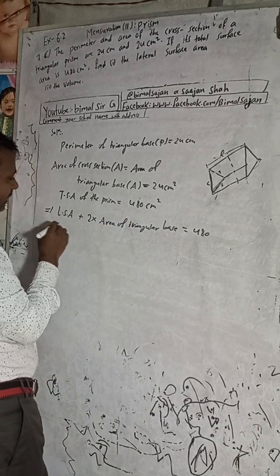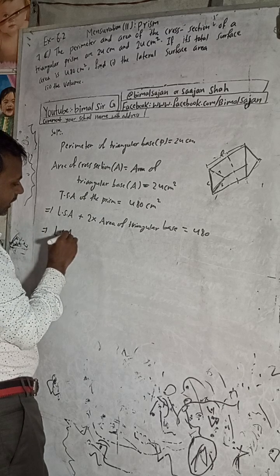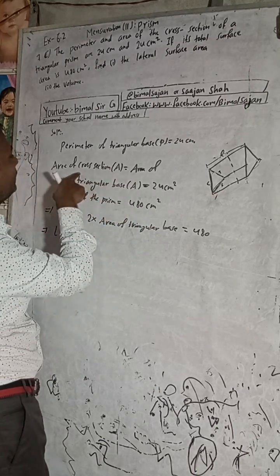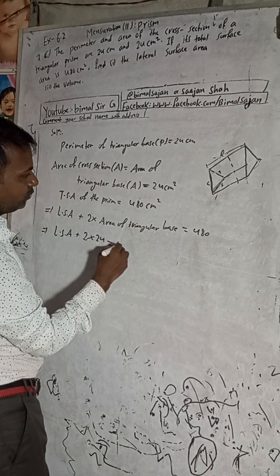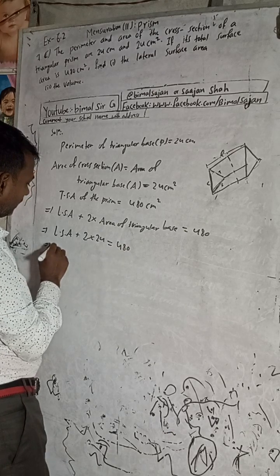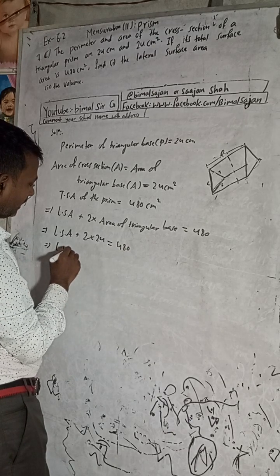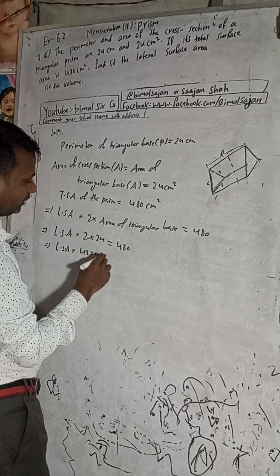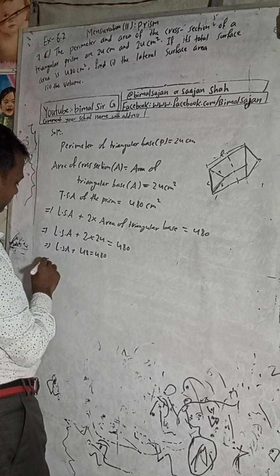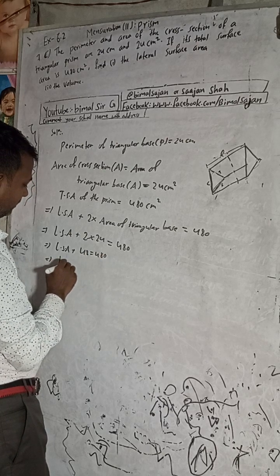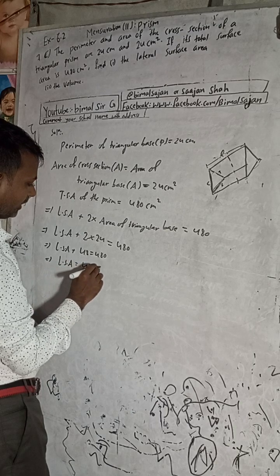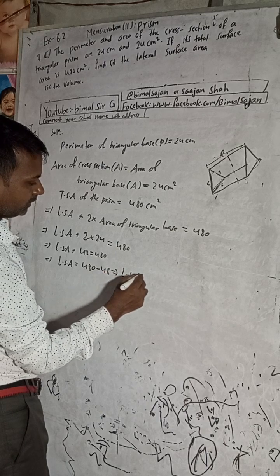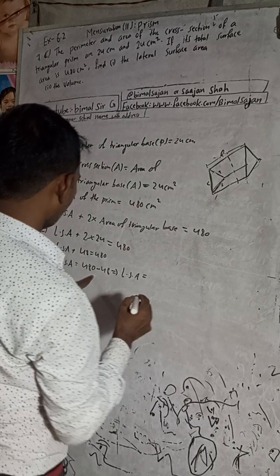So what is the lateral surface area? We have: lateral surface area plus 2 into area of triangular base — which is the same as area of cross-section — equals the total surface area. That means lateral surface area plus 2 into 24 equals 480. So lateral surface area plus 48 equals 480. This implies lateral surface area equals 480 minus 48.